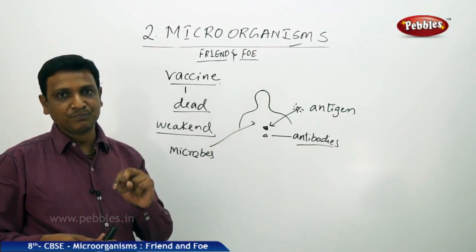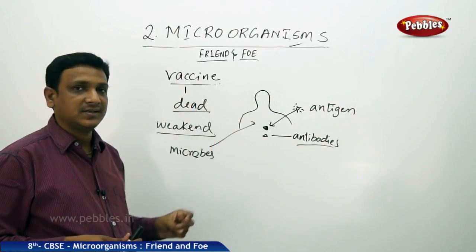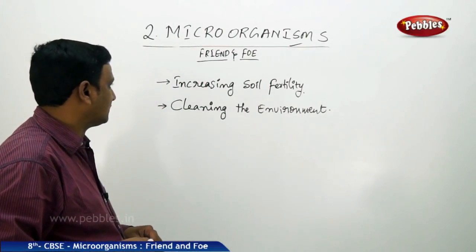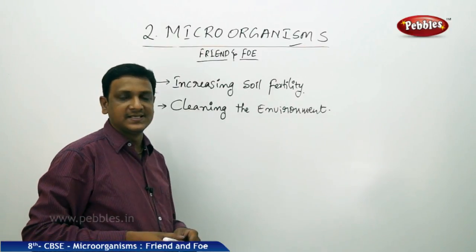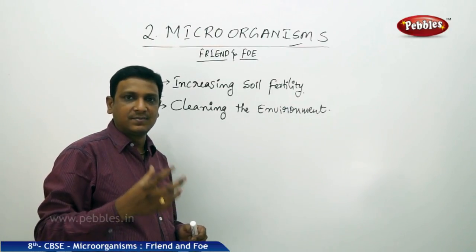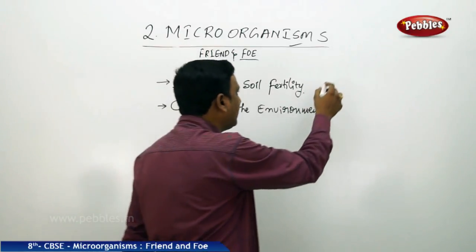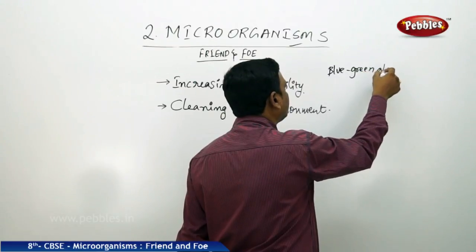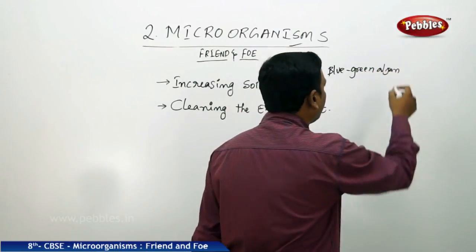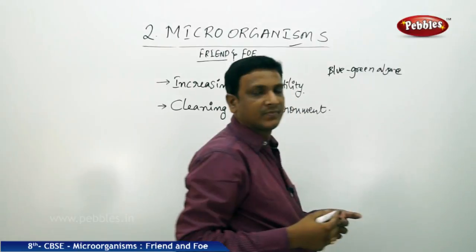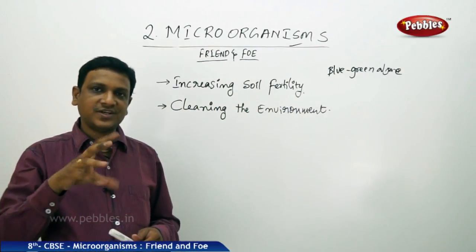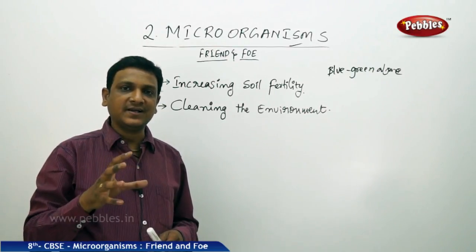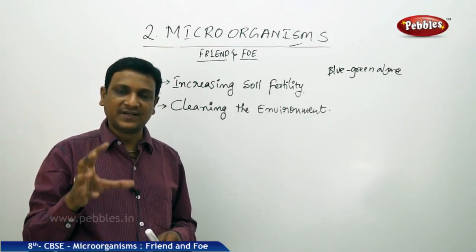The medical use of microorganisms includes two things: vaccines and antibiotics. Now let us see other uses - increasing soil fertility. Soil fertility is increased by certain microorganisms like blue-green algae, cyanobacteria, and nitrogen-fixing bacteria.